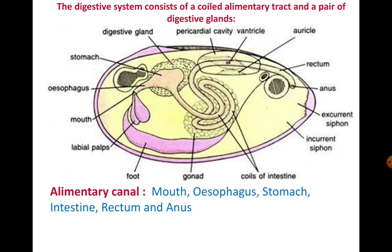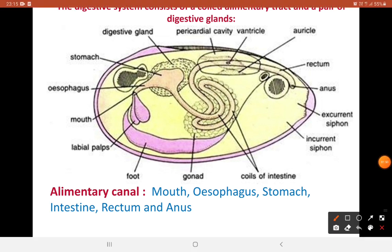If you look at this diagram on the slide, it represents the digestive system in Unio, so you have to practice this diagram. This comes as a 10-mark question wherein you will be asked to describe the digestive system in Unio with a neat labeled diagram. You are expected to draw this neat labeled diagram and explain all the points that we are going to discuss. Observing this diagram carefully gives you an understanding of how the alimentary canal is present in Unio.